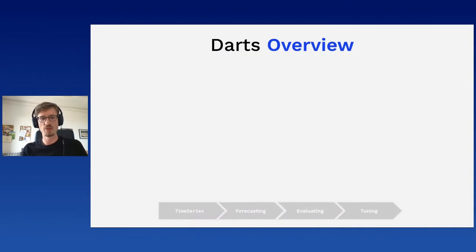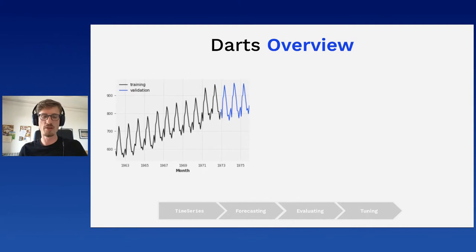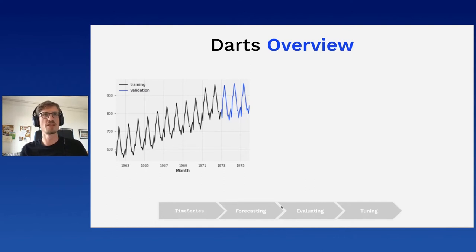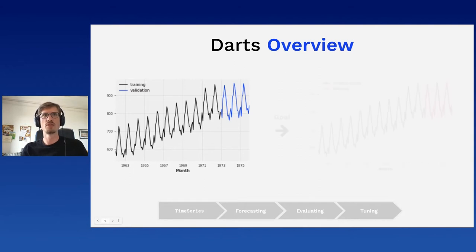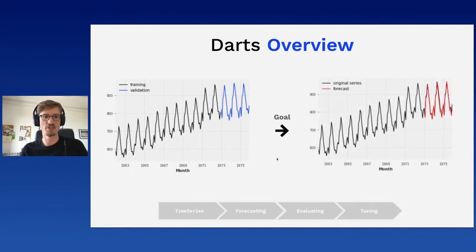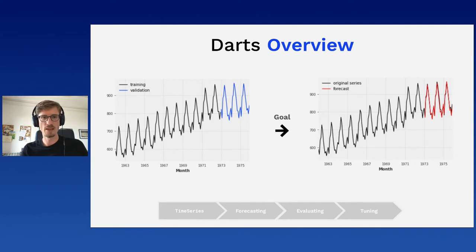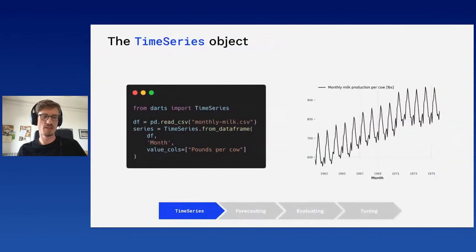We're going to use one example: the monthly cow milk production — the average production of milk per cow. This data goes from the 1960s until the end of the 1970s, and we have the average per month. We can see a time series that is increasing, with some yearly seasonal patterns repeating. We'll use the data in black as the training set, then create a forecast that hopefully approaches the true data shown in blue.